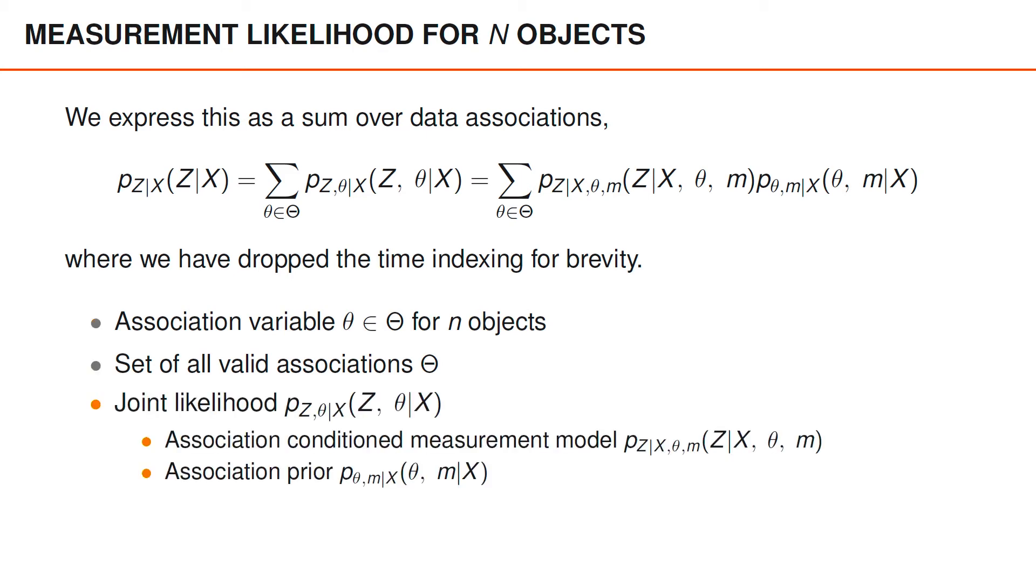For the joint likelihood of the measurements and the data association given the object states, we need the association conditioned measurement model, and we also need the association prior. So that's what we're going to learn about in this section.